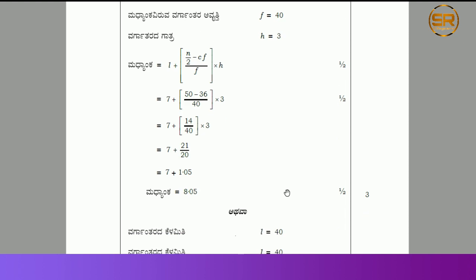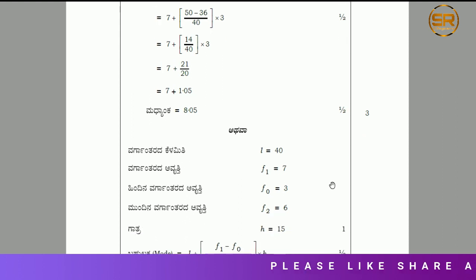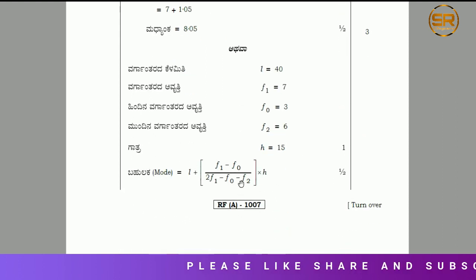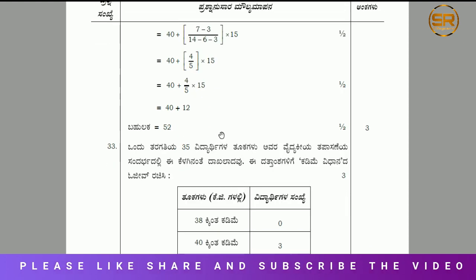That means we have the light of the structure. This is the function of the structure. The structure is 8.05. Now, we have to make the structure of the structure. This is a problem for the structure.